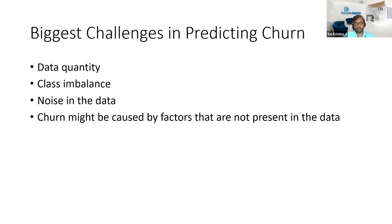The biggest challenges in predicting churn in this context were as follows. First, data quantity: they had around 800 to 1000 customers. This is not like a typical retail or e-commerce dataset with hundreds of thousands of records, so the data quantity was not high. Second, there was a significant class imbalance, which is something commonly encountered in classification problems in machine learning.